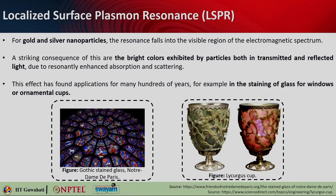This effect has been known for hundreds of years — you can see it in the Gothic stained glass of Notre Dame de Paris, where the beautiful bright colors come from gold or silver nanoparticles embedded in the glass. Similarly, the Lycurgus cup looks different in color depending on how it is illuminated. When the light source is outside, the cup appears green due to scattering resonance at blue-green wavelengths. When the light source is inside, the absorbed blue-green plasmonic resonance is removed, and only red light comes towards you, so the cup appears red. It is the same cup but looks different because of its plasmonic properties.